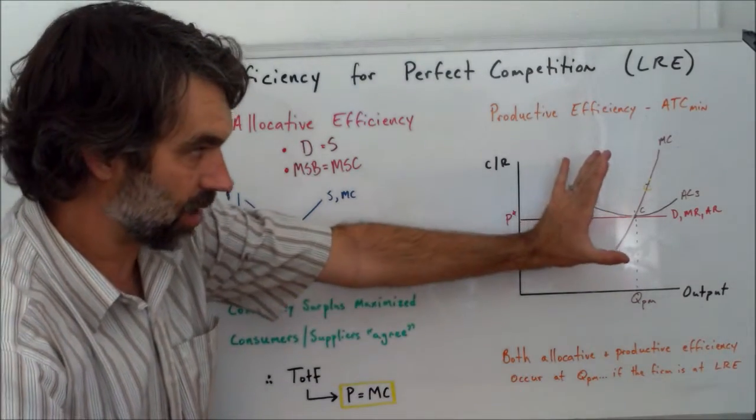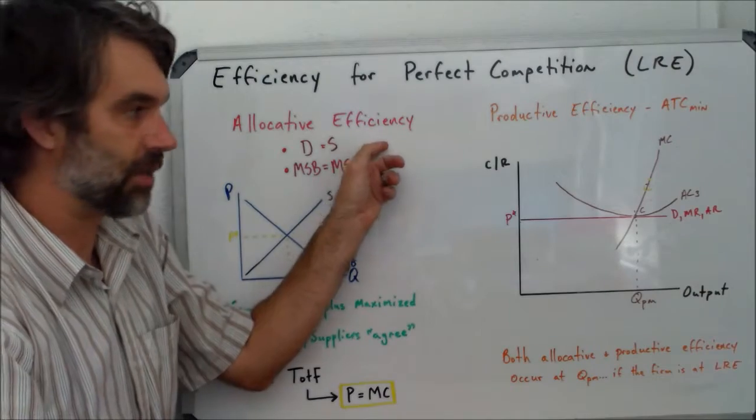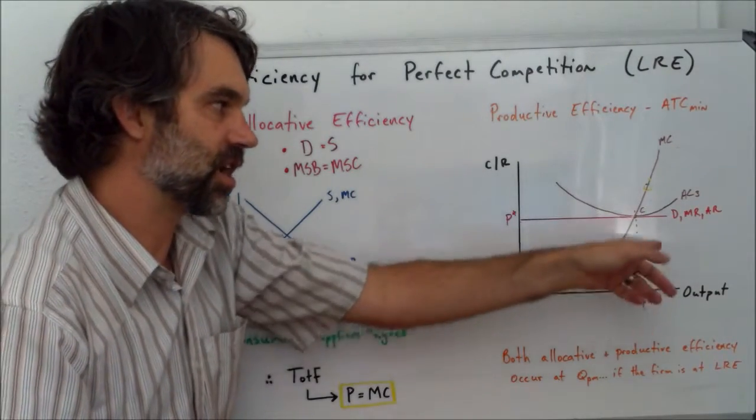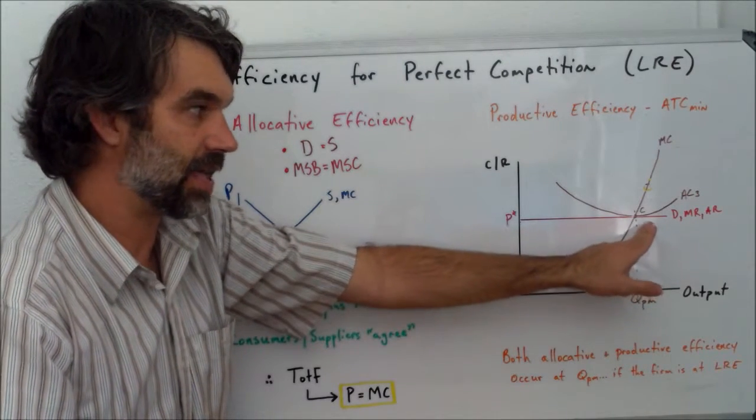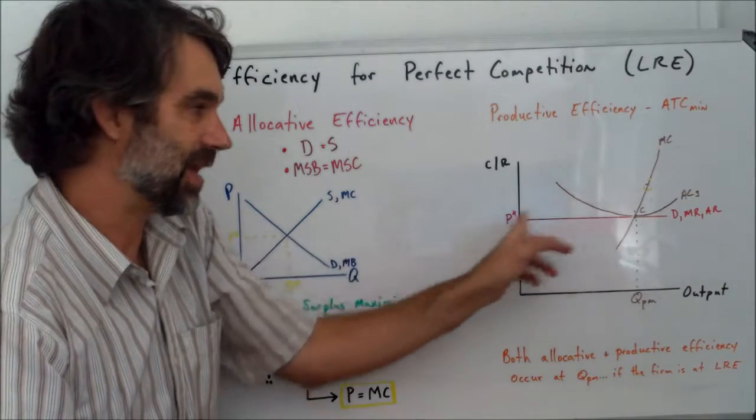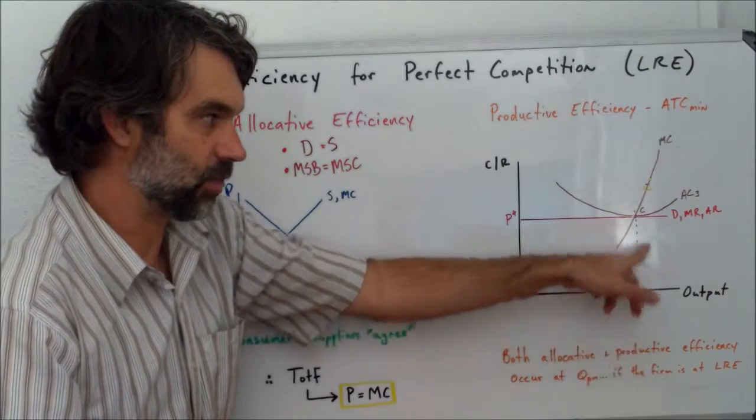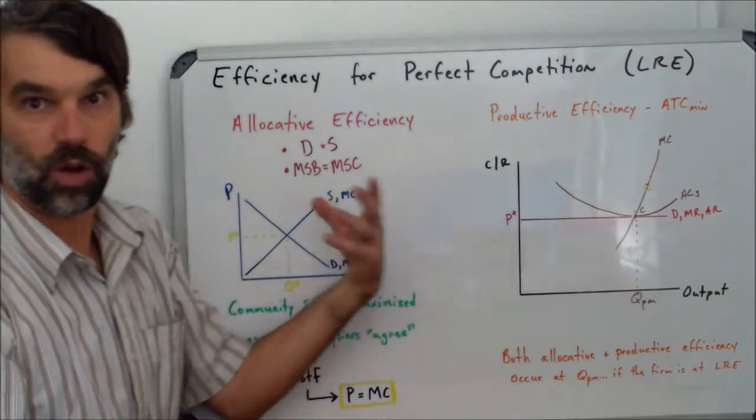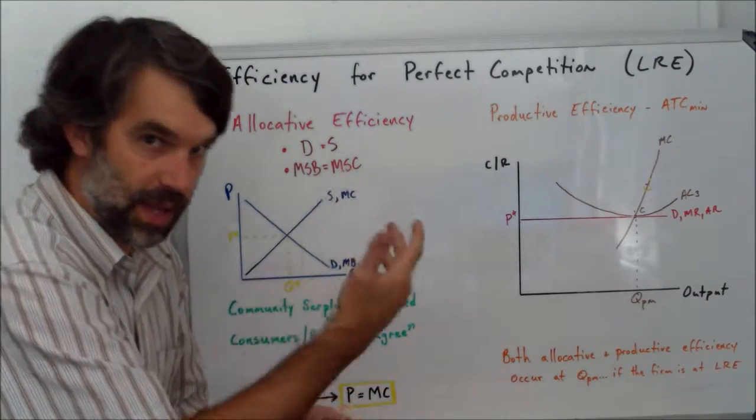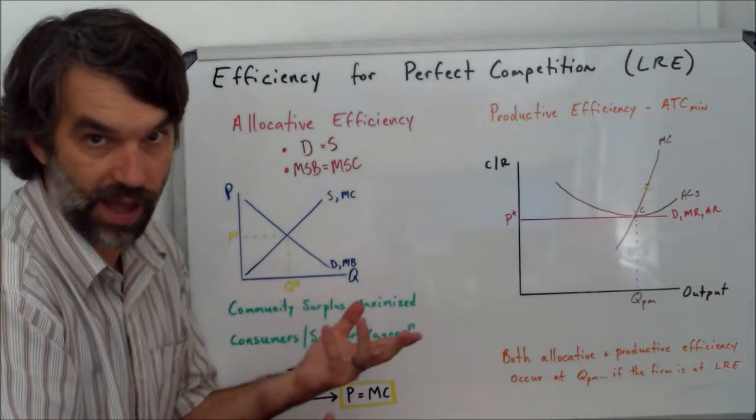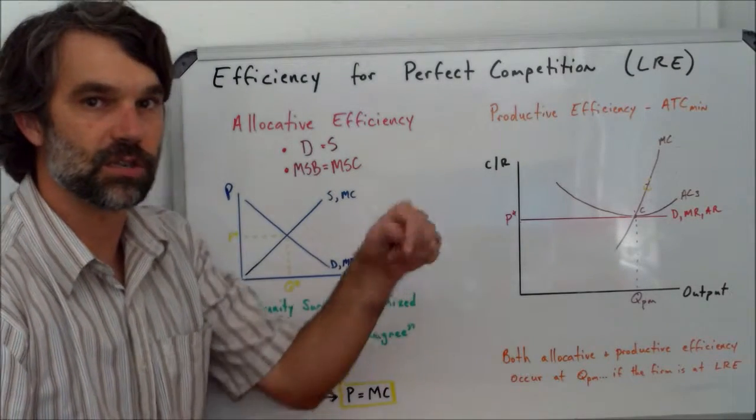So in this case as well, not only in long run equilibrium, not only do we have productive efficiency, but we also have allocative efficiency. Note that those two other average cost curves that I had there before, they still in those, the price still would have been equal to the marginal cost. Because price is equal to marginal revenue here and the profit maximization point is where MC is equal to MR, that will always occur. So allocative efficiency happens no matter whether it's a long run equilibrium or whether they're making abnormal profit or a loss. But it's productive efficiency that only occurs in long run equilibrium. If you have any questions, put them in the comments below.